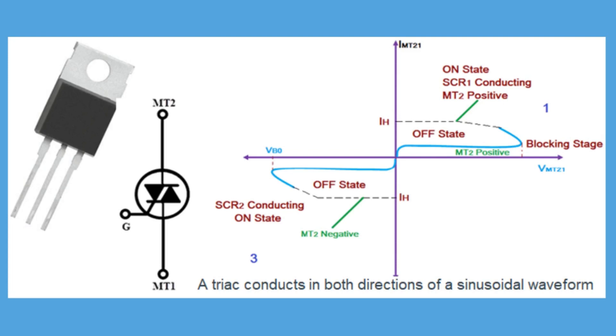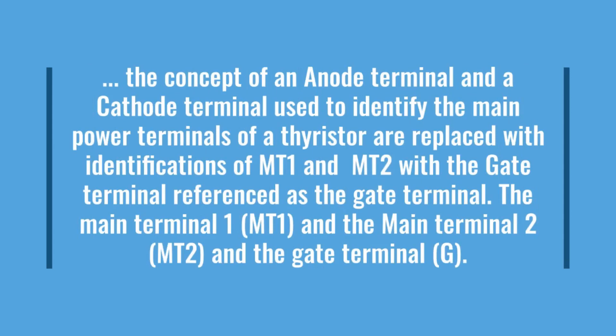Since the TRIAC conducts in both directions of a sinusoidal waveform, the concept of anode and cathode terminals used in a thyristor are replaced with Main Terminal 1 and Main Terminal 2, with the gate terminal referenced as the gate terminal. Main Terminal 1 is abbreviated as MT1, Main Terminal 2 as MT2, and the gate terminal as G.